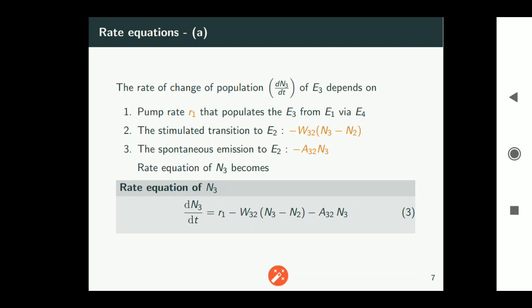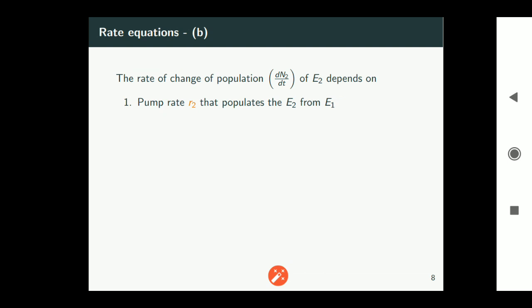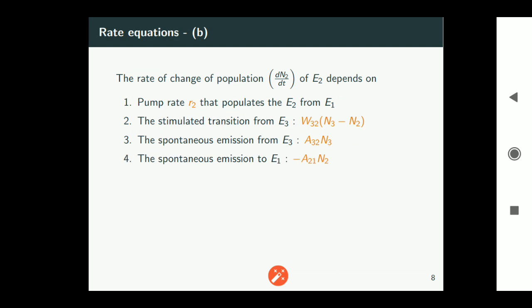Then let us write rate equation of e2. It depends on the pumping rate r2 that populates e2 from e1. And stimulated emission from e3 to e2 will actually increase the population in e2. Therefore that is given by w32*(n3 minus n2). Spontaneous emission from e3 also increases the population which is given by a32*n3. And spontaneous emission from e2 to e1 which is a very fast process that actually decreases the population of n2. That is proportional to minus a21*n2.